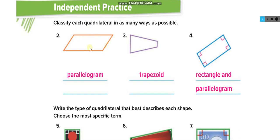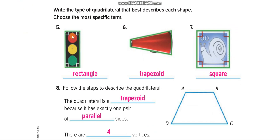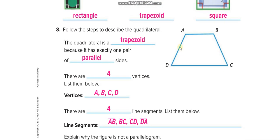This is a parallelogram — opposite sides are the same length, but no 90-degree angles. If it had 90-degree angles, we'd call it a rectangle, and a rectangle is also a parallelogram. A trapezoid has two parallel lines and two non-parallel lines — one pair of parallel sides. A rectangle has 90-degree angles, equal opposite sides, and parallel sides.